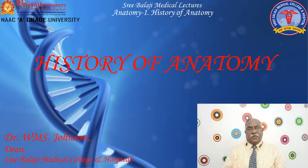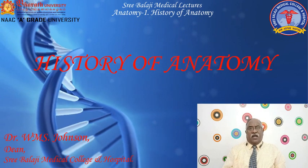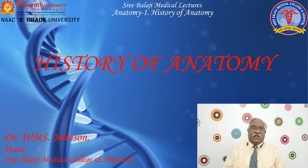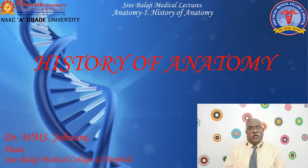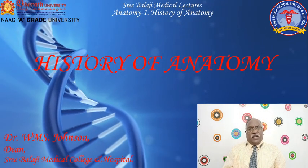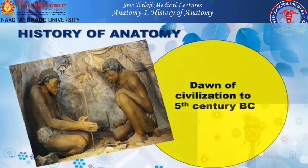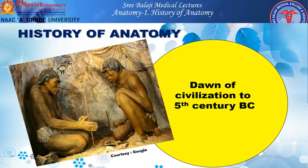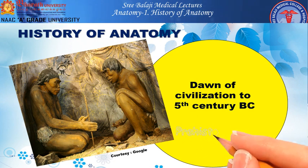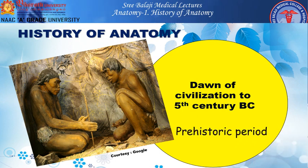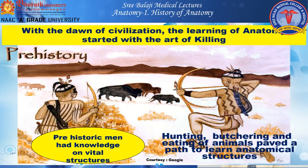The history of anatomy can be divided into prehistoric and post-Renaissance segments, showing how it developed over a period of time. We can classify from the dawn of civilization to the 5th century BC as prehistoric time. Then came the civilizations across the world — the Chinese, Indus, Egyptian, Greek, and Roman. With the dawn of civilization, the learning of anatomy started with the art of killing, as prehistoric man had knowledge of vital structures which helped them to kill animals.